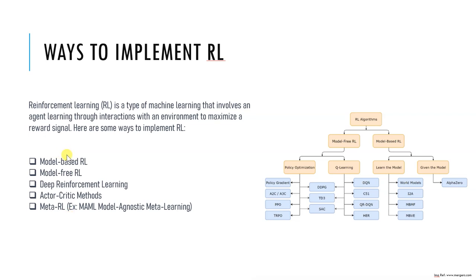First is model-based reinforcement learning. This approach involves building a model of the environment and using it to plan actions that maximize the expected reward. This can be achieved through methods like dynamic programming and Monte Carlo methods. We will be learning about this in later tutorial parts, along with Python examples.